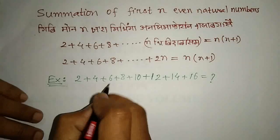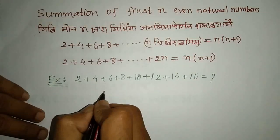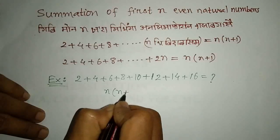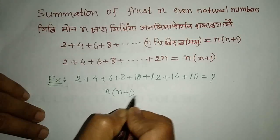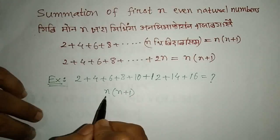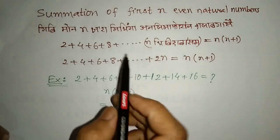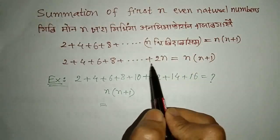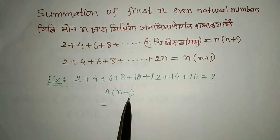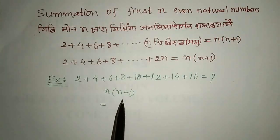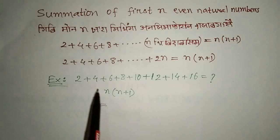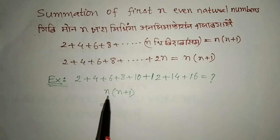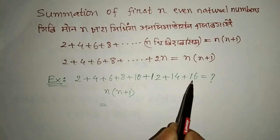So this is n plus 1. This is n plus 1. If you have the formula here, you will be n plus 1.